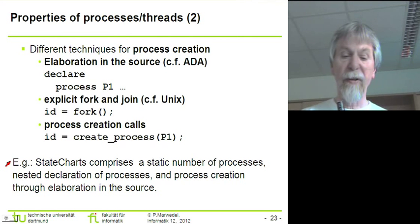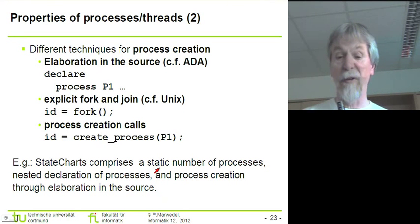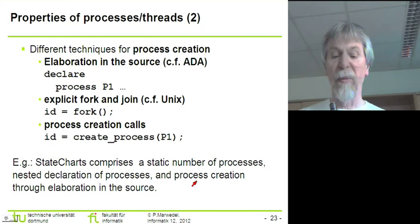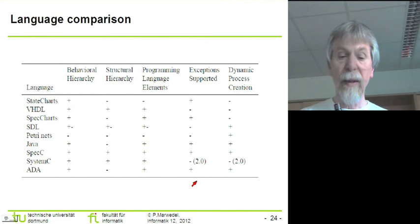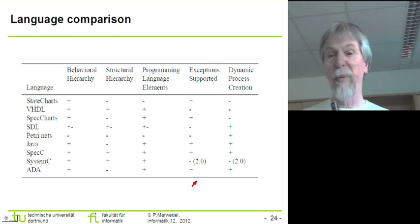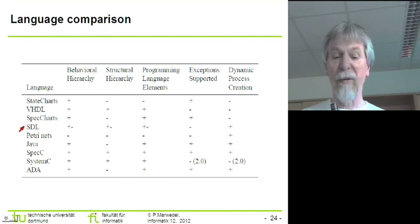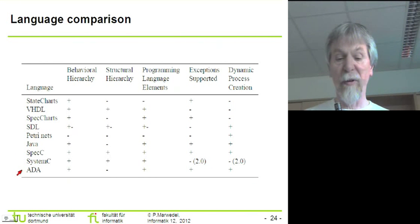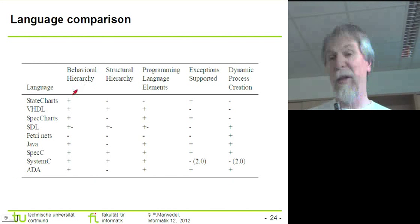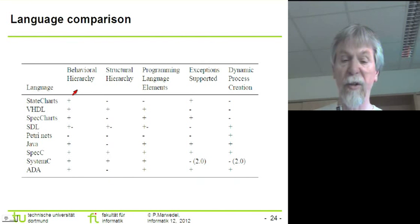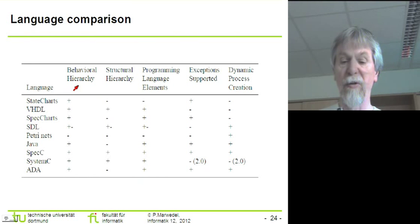Using these criteria, we can argue that state charts comprises a static number of processes, since it models hardware. It allows nested declaration of processes, and process creation is through elaboration in source code. This table also includes SDL, Petri nets, Java, other hardware description languages, and ADA. Using the criteria from the beginning of this chapter, we see that no language meets all criteria, and therefore we usually have to live with compromises.